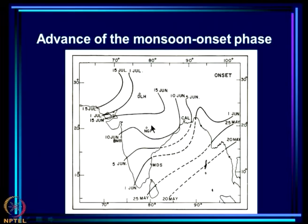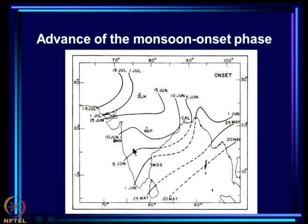Let us recall how the advance of the monsoon in the onset phase takes place. The onset occurs over Kerala around 1st June, while onset has already occurred over the Bay of Bengal branch around 20th May. This branch moves northward, with onset around 5th June, then 10th June. Continued northward and westward progression leads to almost the entire country being under the sway of the monsoon by 1st July. By 15th July it has reached further north. By 1st July, the CTCG gets established in the monsoon zone.